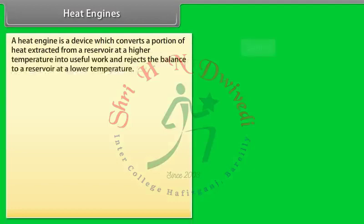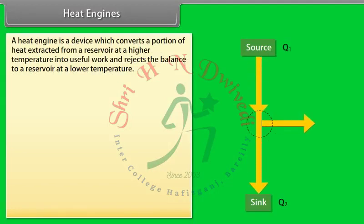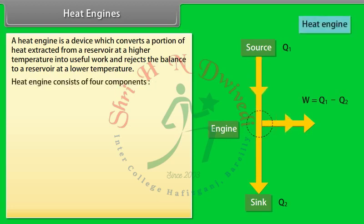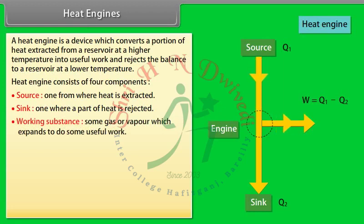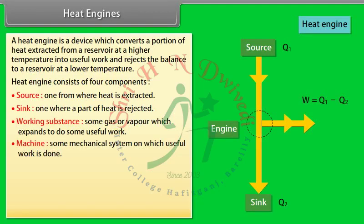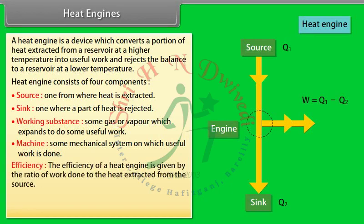A heat engine is a device which converts a portion of heat extracted from a reservoir at high temperature into useful work and rejects the balance to a reservoir at lower temperature. A heat engine consists of four components: a source (from where heat is extracted), a sink (where part of heat is rejected), a working substance (gas or vapor that expands to do work), and a machine (on which useful work is done). The efficiency of a heat engine is given by: efficiency = 1 − Q₂/Q₁.